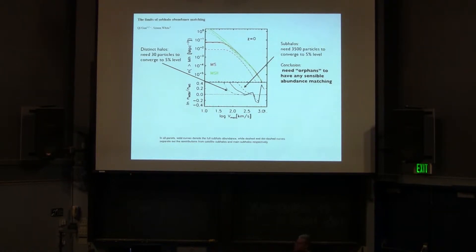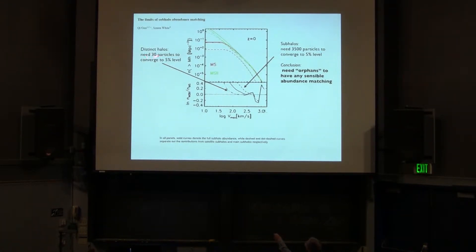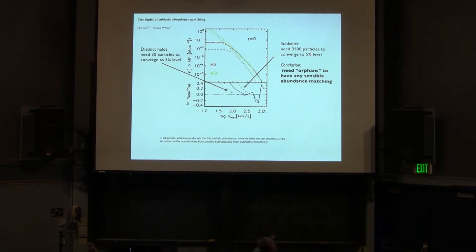For distinct halos, the 10% convergence level requires about 30 particles — it's amazing how accurate it can be for isolated halos. For sub-halos, the convergence requires about 3,000 particles at the 5% level. If you multiply by number of particles and so on, you would need to throw out all our results, and their results are also in trouble. So that motivates them to do what they call 'orphans' — when a halo is dissolving and becomes a sub-halo, you assign the nearest dark matter particle and say 'is this my orphan?' which is actually a numerical artifact.